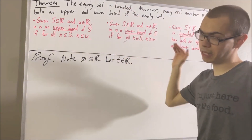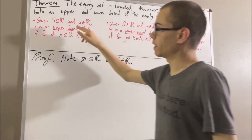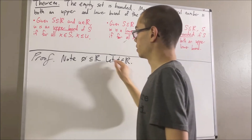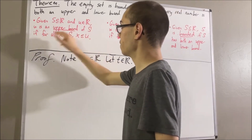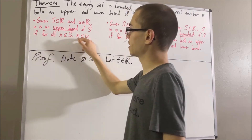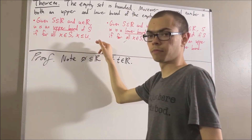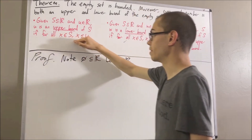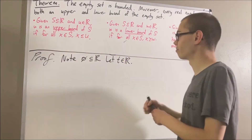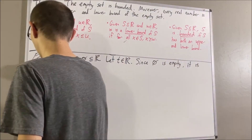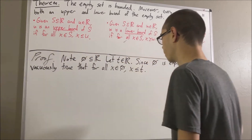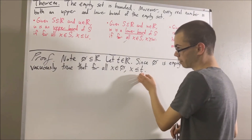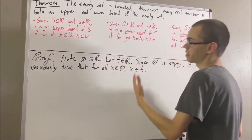What does it mean for t to be an upper bound of the empty set? Well, if we take s in our definition to be the empty set and u to be t, then t is an upper bound of the empty set if, for every element x in the empty set, x is less than or equal to t. Well, since the empty set is empty, the empty set has no elements, so this statement is vacuously true. And since this is precisely what it means for t to be an upper bound of the empty set, we have that t is an upper bound of the empty set.